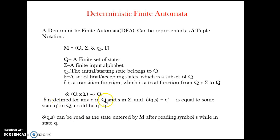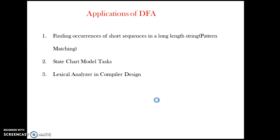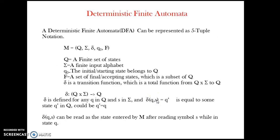More formally, delta is defined for any Q in Q and s in sigma: delta(Q, s) gives Q-dash, where Q is a state belonging to Q and s is an input alphabet belonging to sigma, and Q-dash also belongs to Q. Sometimes you enter into the same state, meaning Q-dash may equal Q.